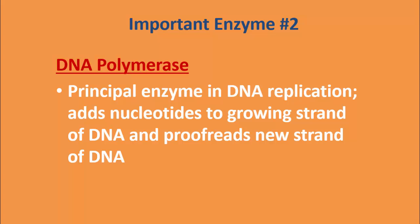DNA polymerase is our second important enzyme and it is the principal enzyme involved in DNA replication. It adds nucleotides to our growing strand of DNA and proofreads the new strand to make sure there were no errors. When we do have errors or changes in our DNA replication, those are called mutations.